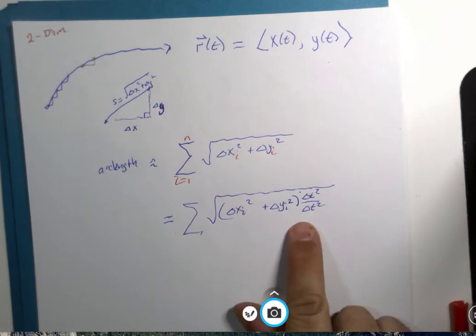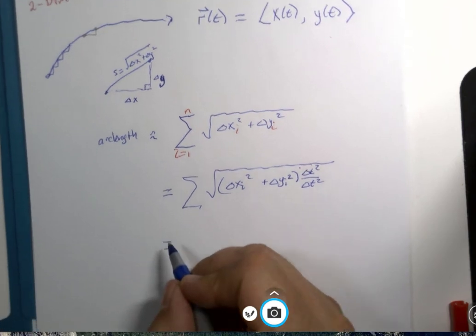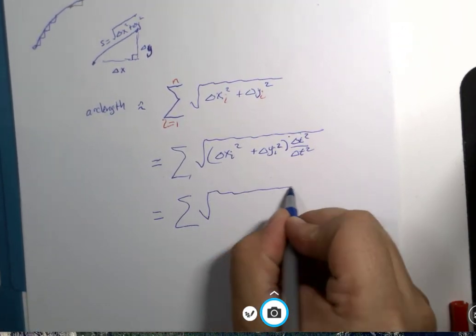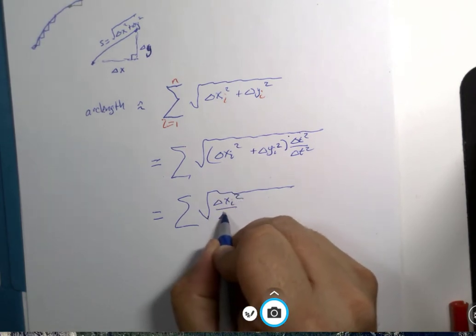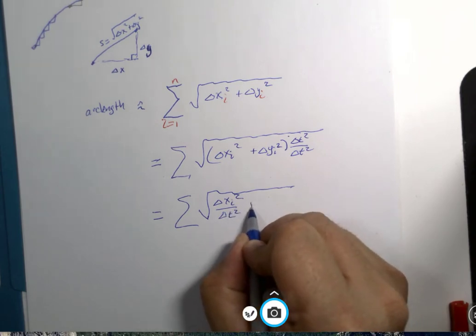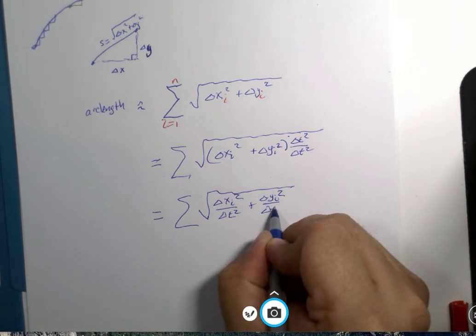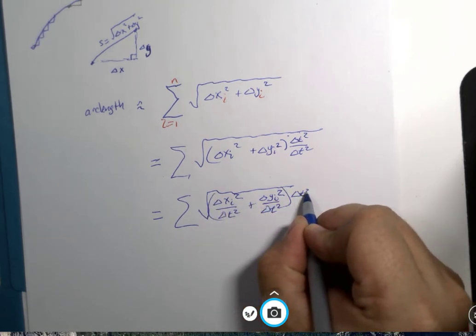And I'm going to say this is delta t squared over delta t squared. It's all in the root. This is equal to 1. There's no harm in multiplying by 1, is there? Then I'm going to choose to distribute a portion of this. Delta x_i squared delta t squared. Delta y_i squared delta t squared. And then I've got a delta t squared.